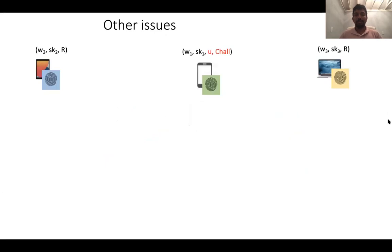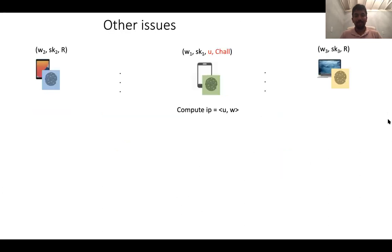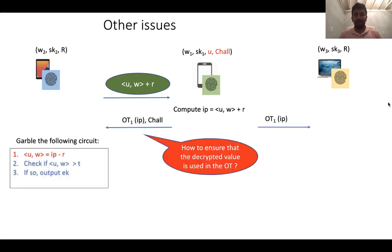Now let me move on to some other issues with this protocol structure. Notice that by running this step, P1 now learns the decryption — the inner product directly in the clear. This is too much leakage because we do not want P1 to learn any information whatsoever about either the template or the measurement. While P1 knows the measurement since it uses it, it shouldn't learn the template. So the inner product leaks information about the template. How do we prevent that? This can just be done by a simple one-time pad that P2 adds: P2 adds some randomness R to the inner product, and this hides anything about W entirely from P1's point of view. The rest of the protocol can then proceed. The next challenge is how do we ensure that P1 indeed uses this value IP that it decrypts in the OT query.